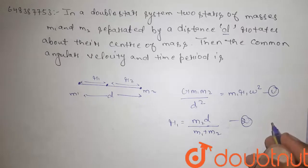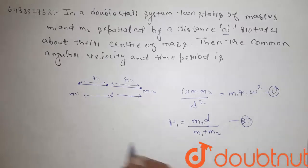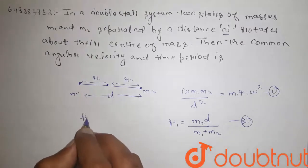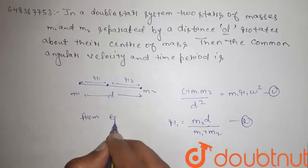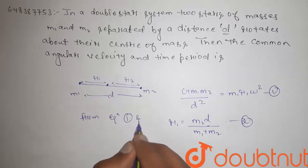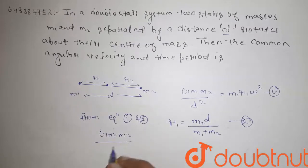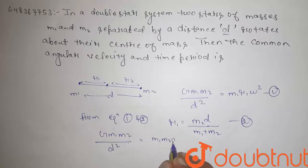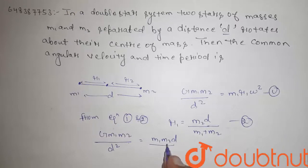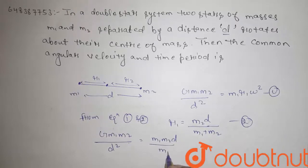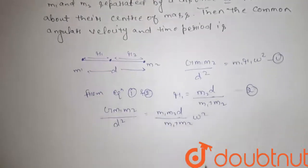From equation 1 and 2, we can write G m1 m2 divided by d square equals m1 times m2 d divided by m1 plus m2 times omega square.